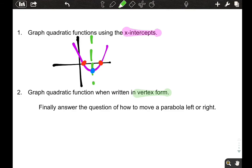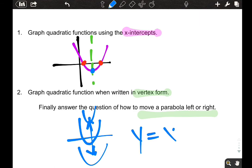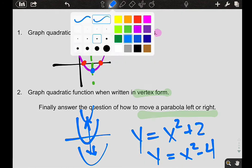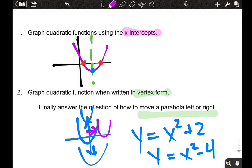And then, secondly, we're going to use something called vertex form. Vertex form is just a different way to write the equation. The equation takes on a different form, as you might guess. And when we answer this question, we're going to finally answer how to move a parabola left or right. We already know that I can move my parabola up or down simply by changing the c value. y equals x squared plus 2, y equals x squared minus 4. But how the heck do we take this and move it this way? Left or right?